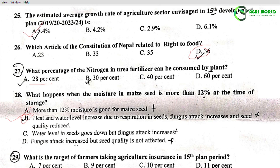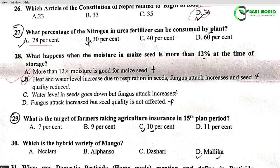Question 29: What is the target of farmers taking agriculture insurance in the 15th plan period? Options: 7%, 9%, 10%, 11%. The correct answer is 10%.